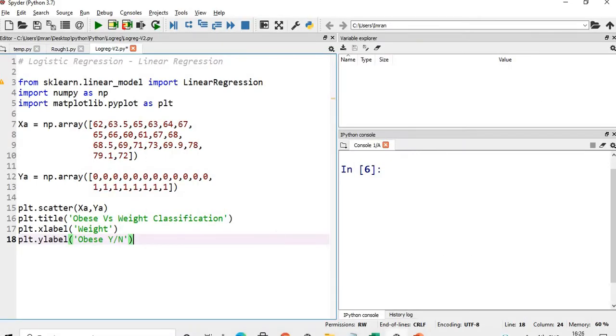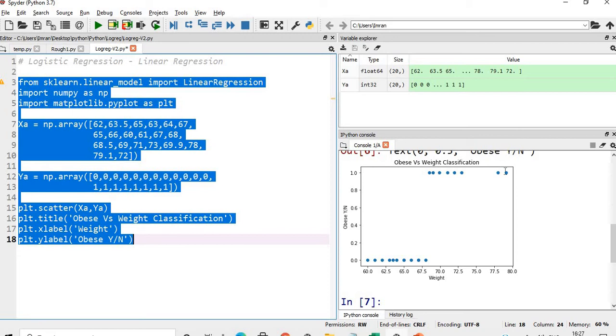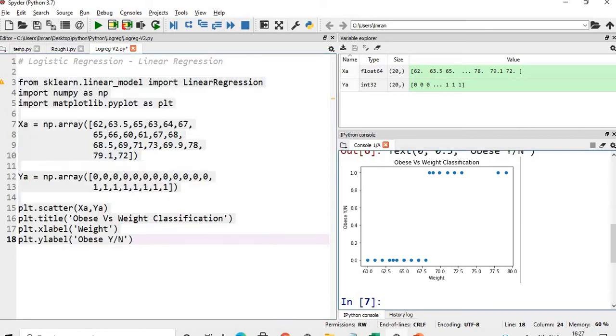I will create a program where my x-axis is weight and y-axis is whether I am obese or not. We'll first see negatives of implementing binary classification with linear regression. Here are my weights and category where zero is not obese and one is obese. This is a scatter plot of typical binary classification - this shows people with those weights are obese and this shows they are not obese.